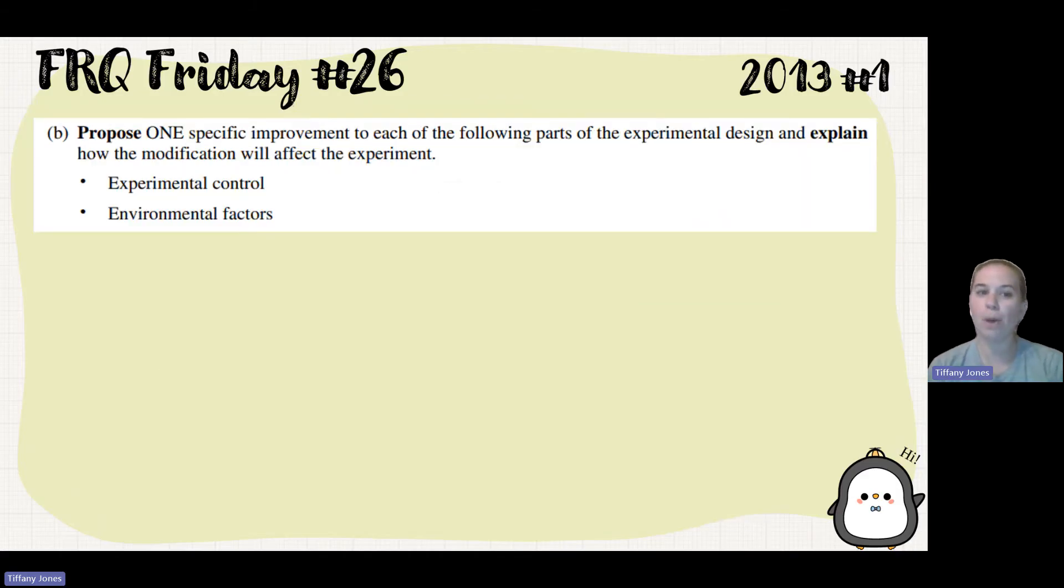Part B asked us to propose one specific improvement to each of the following parts of the experimental design and explain how that modification will affect the experiment. So, experimental control. Our control was the dry cotton ball, and the experimental treatment was the wet glucose cotton ball.